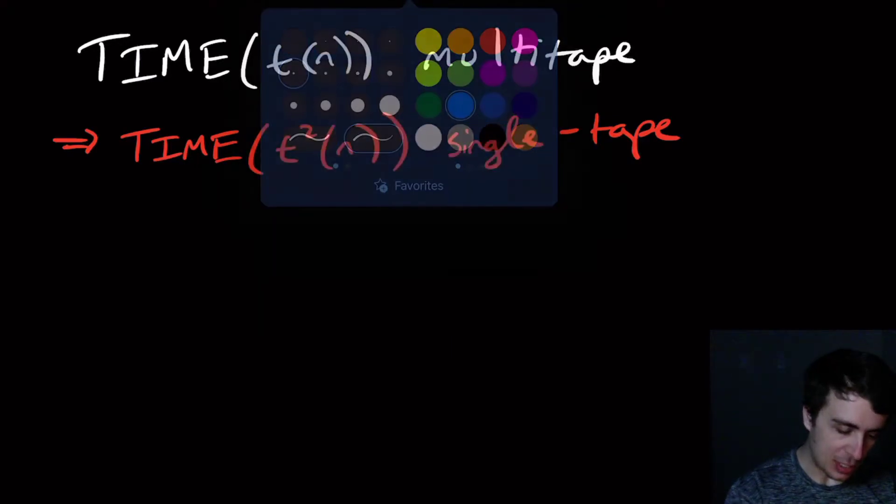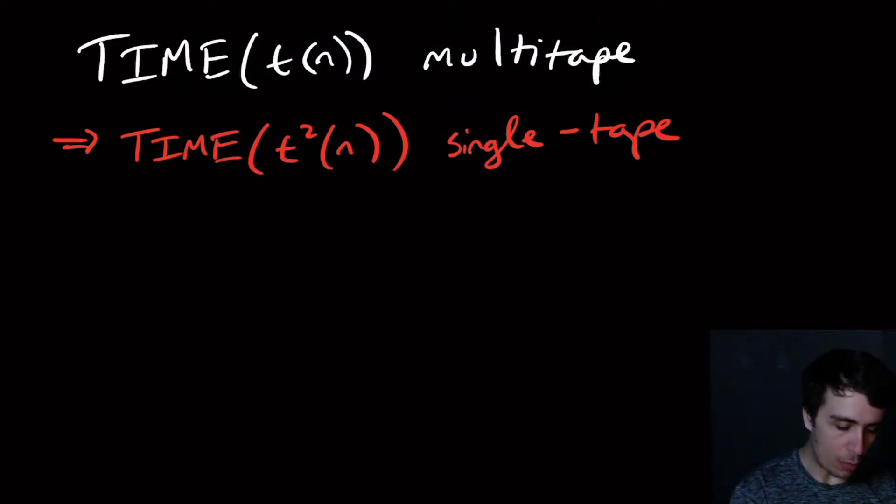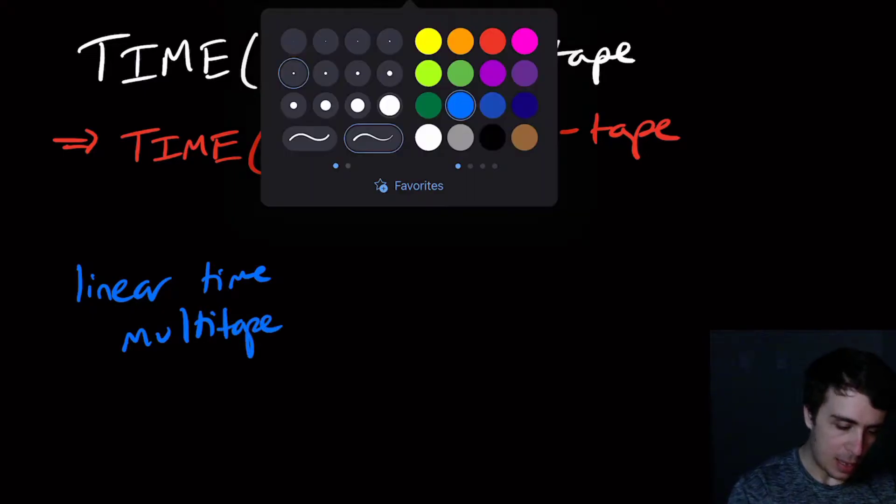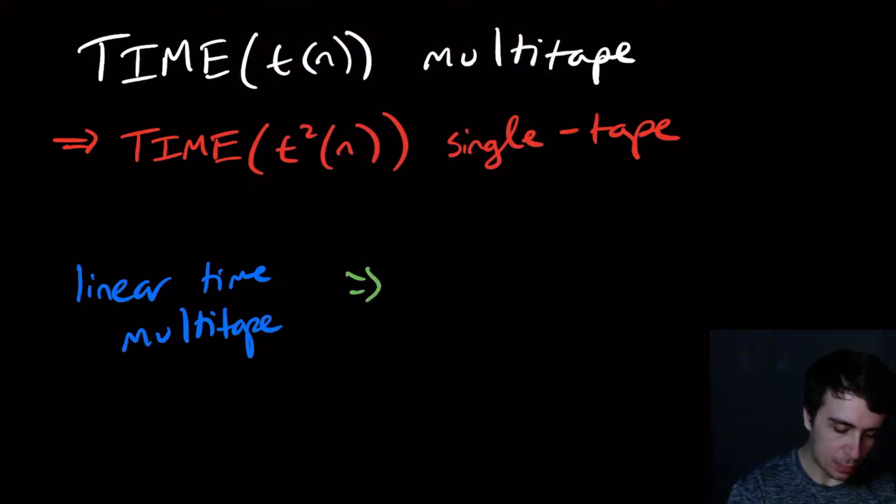So as an example, if we have a multi-tape one that runs in linear time, for a multi-tape multitape machine, then what we can get out of this is a quadratic time single tape machine.